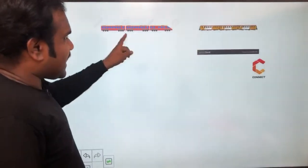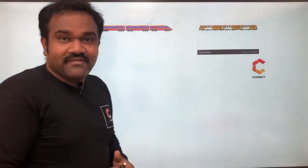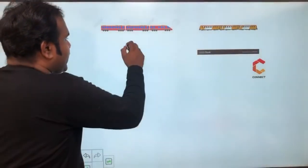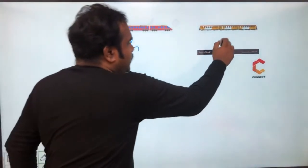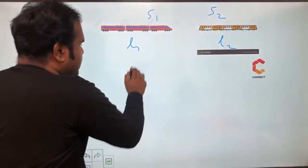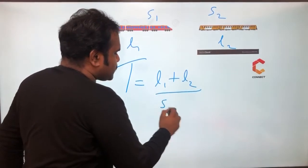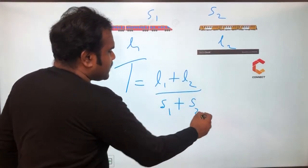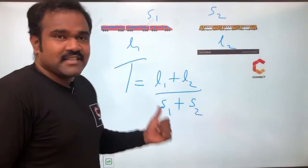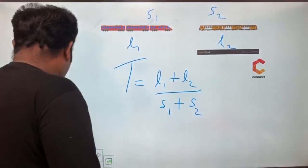Fourth case is a train crossing another moving object with length. So if this is going to be L1 of length, this is L2 and if this is S1, this is S2. When they are coming in opposite directions, we can say time taken is equal to L1 plus L2 by S1 plus S2, since they are moving in the opposite direction. This is case number 4. So based on 4 cases, we will start solving problems.